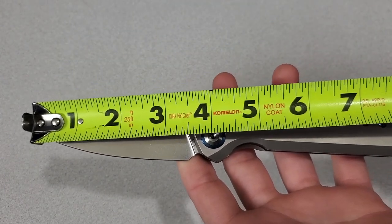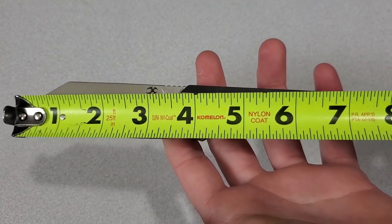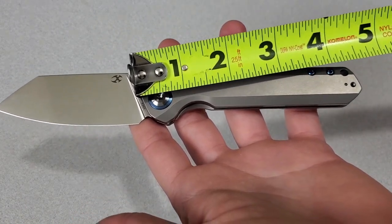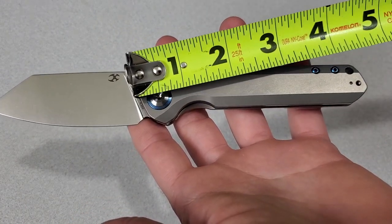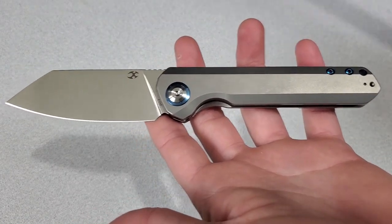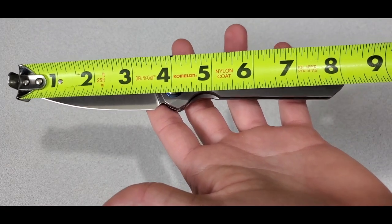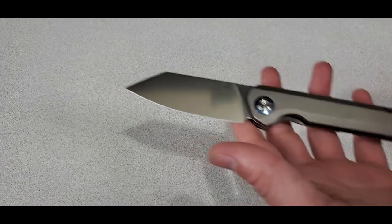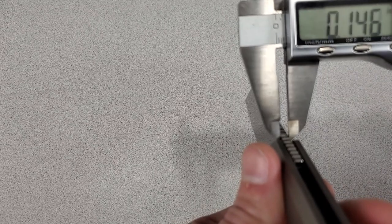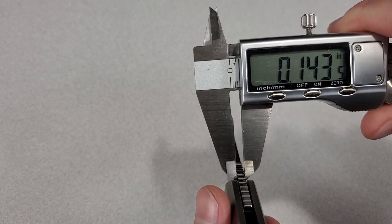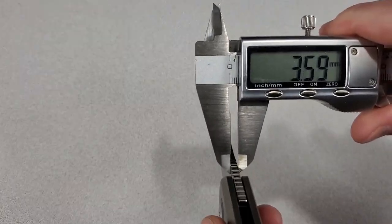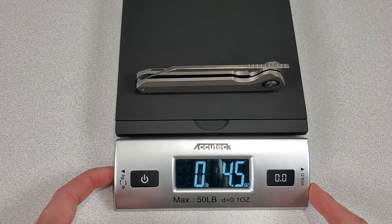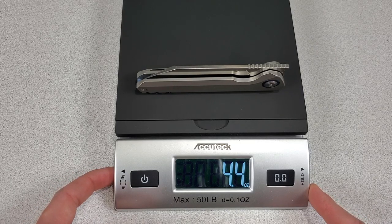The blade length is 3.6 inches or 9 centimeters. The handle length is 4.6 inches or 11.7 centimeters. For an overall length of 8.2 inches or 21 centimeters. The blade thickness is 0.14 inches or 3.6 millimeters. And it weighs 4.45 ounces or 126 grams.